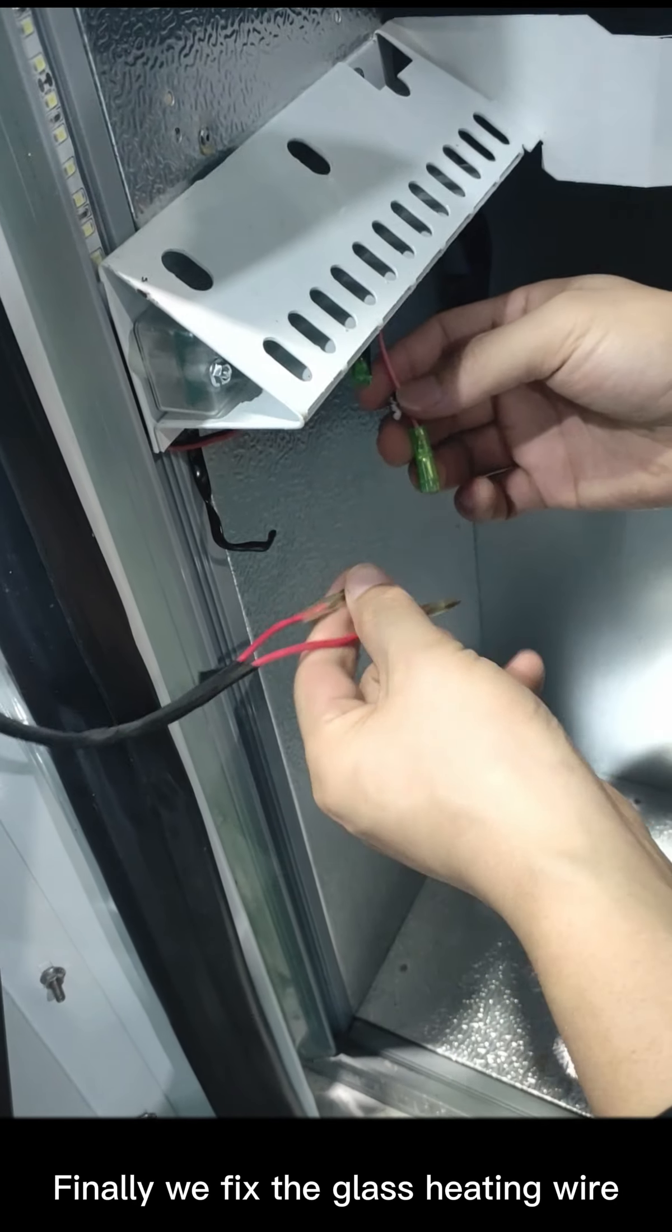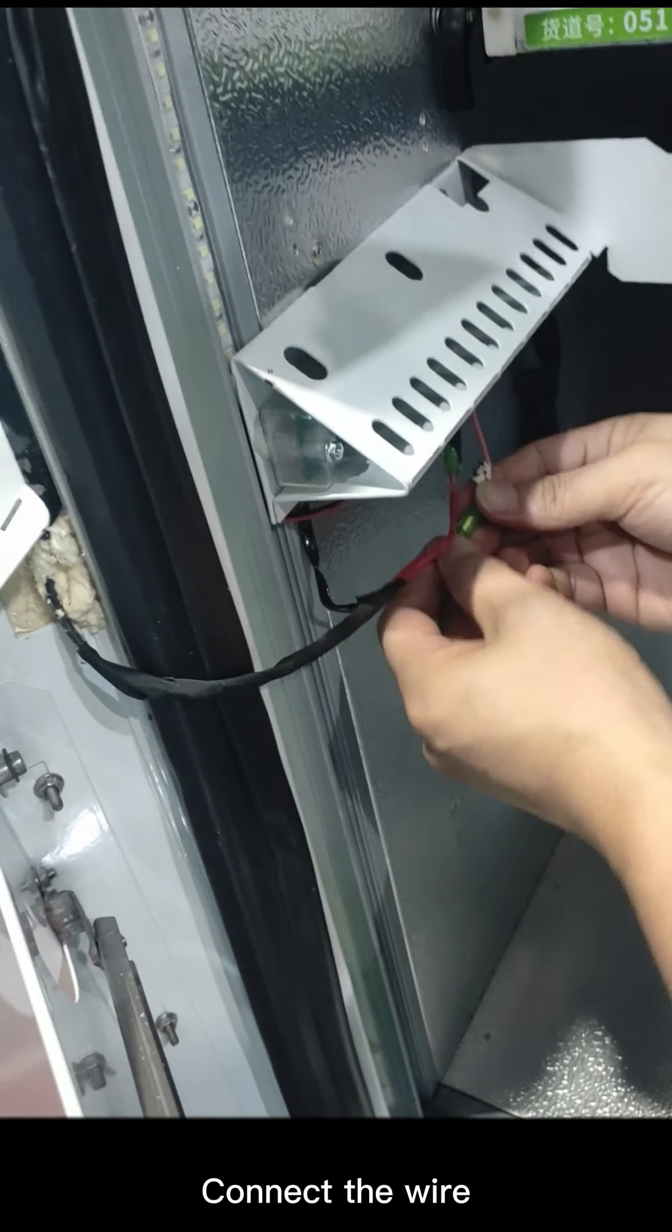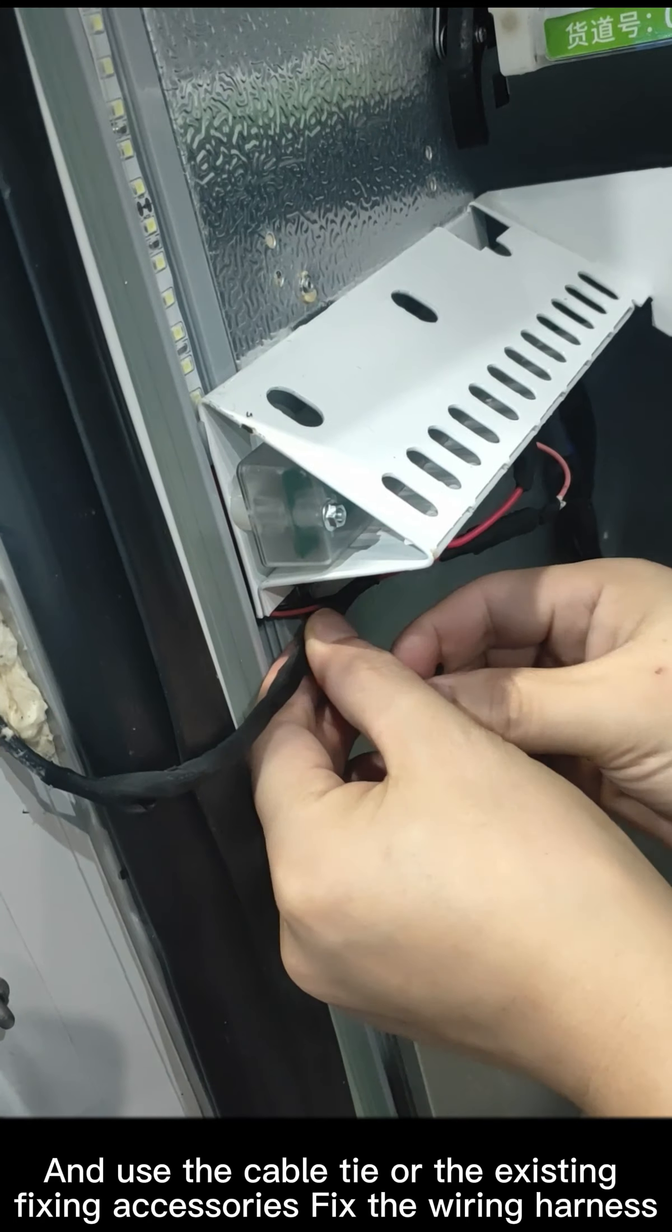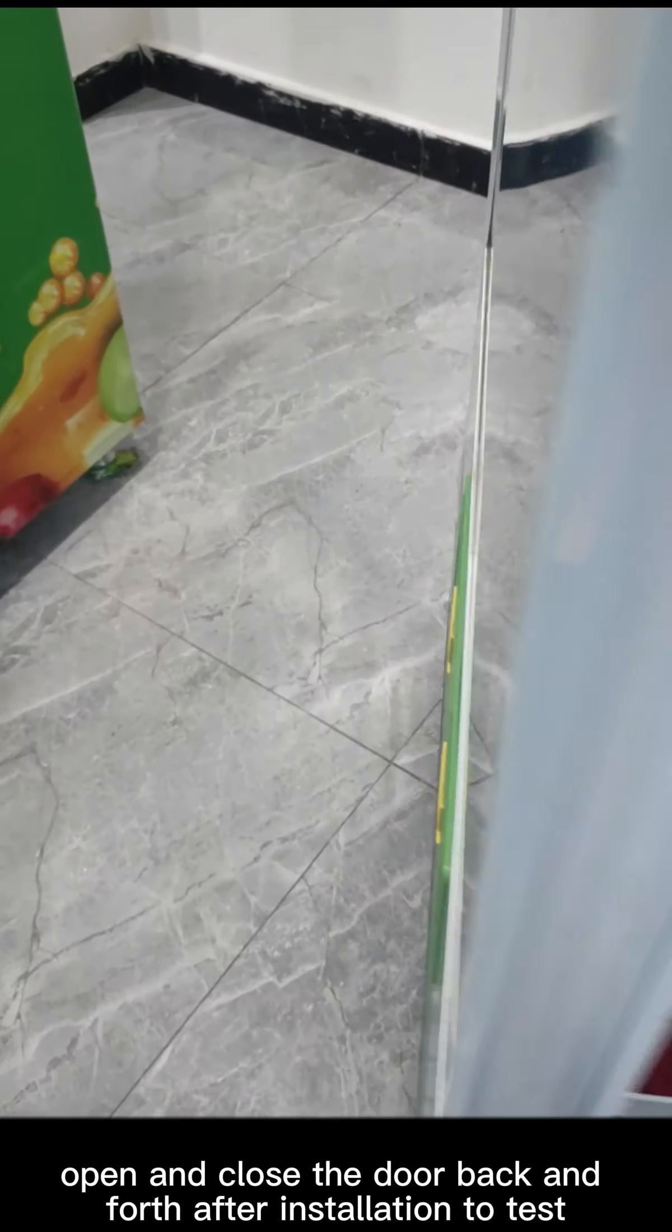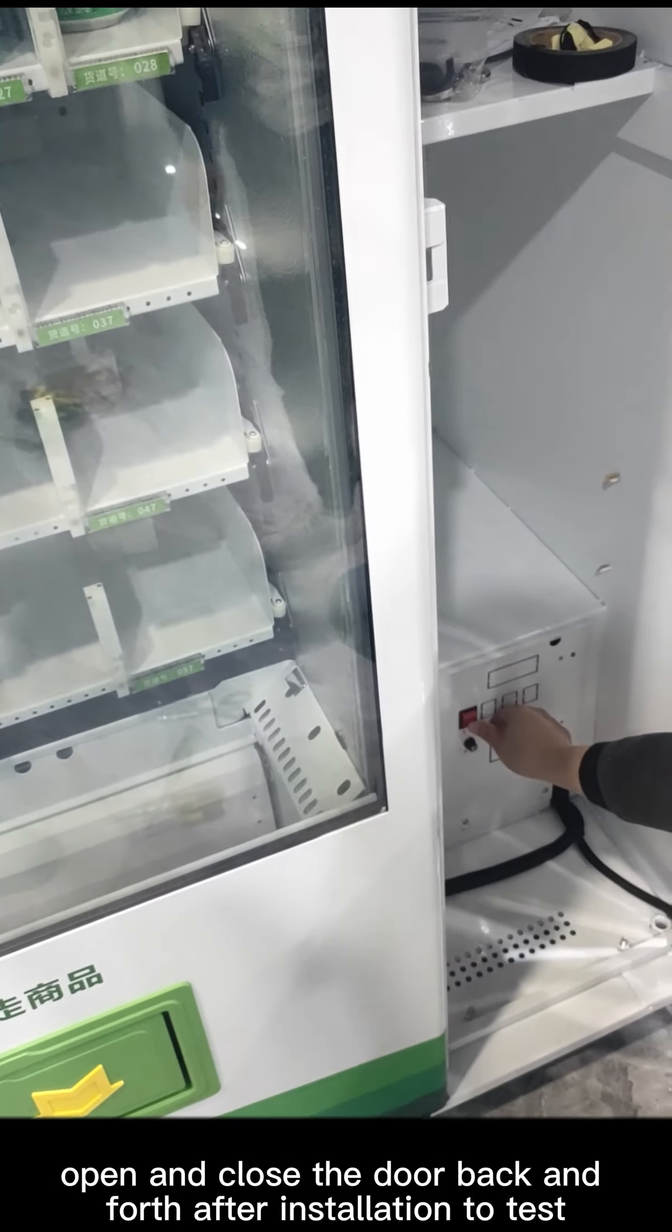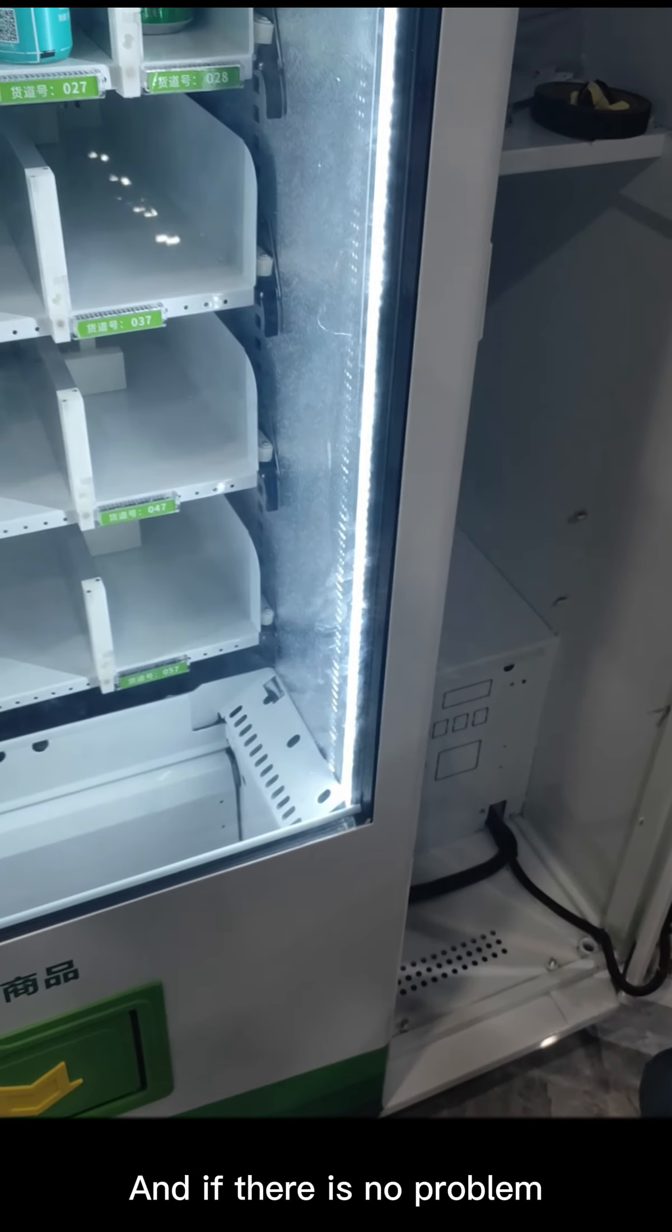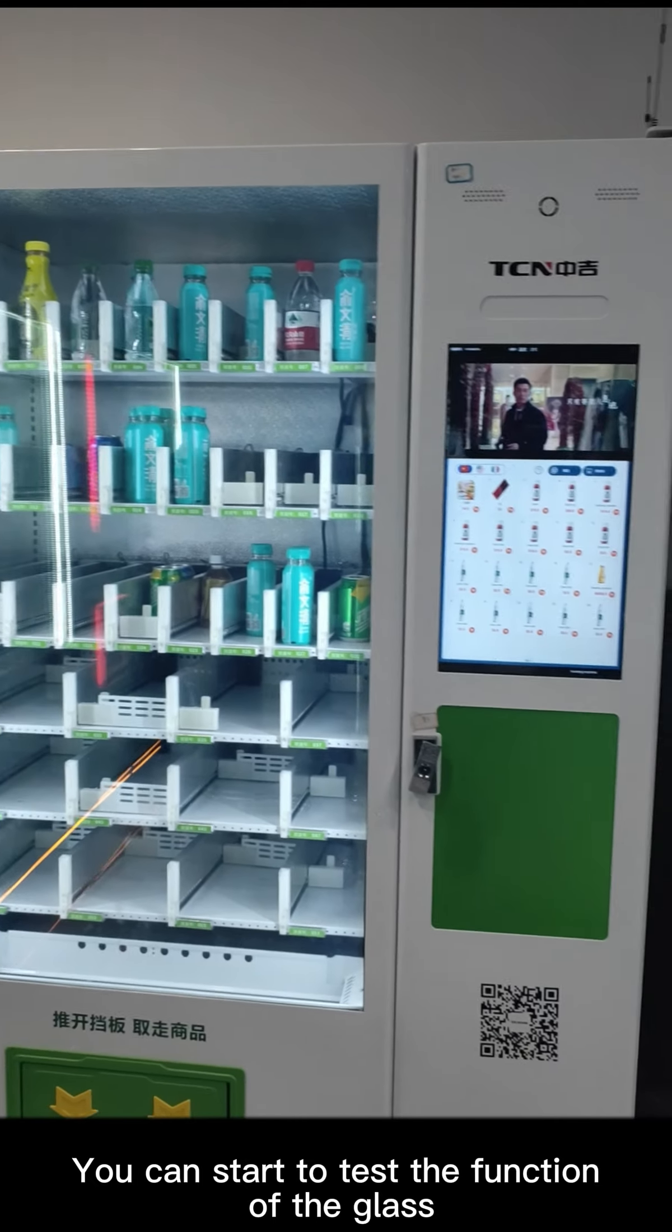Finally we fix the glass heating wire, connect the wire, wrap the electric tape, and use the cable tie or the existing fixing accessories to fix the wiring harness. Open and close the door back and forth after installation to test, and if there is no problem, you can start to test the function of the glass.